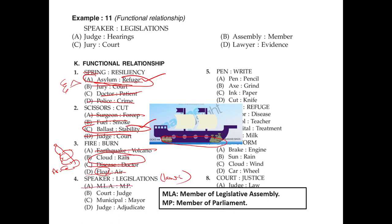Court and judge: a judge's environment is the court, but there is no direct functional relationship. Mayor is the person in charge of an area, but that also doesn't fit the functional relationship pattern. Judge and adjudicate: a judge makes adjudications — decisions of right and wrong — so D is the right answer.